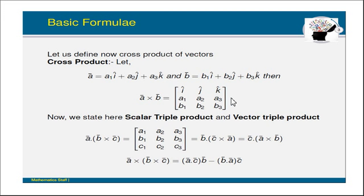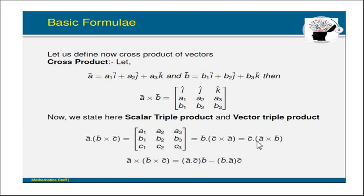Now we state the scalar triple product. a-bar dot (b-bar cross c-bar) can be defined as the determinant with first row a1, a2, a3; second row b1, b2, b3; and third row c1, c2, c3. This equals b-bar dot (c-bar cross a-bar), which also equals c-bar dot (a-bar cross b-bar). Since this determinant contains no i-bar, j-bar, or k-bar, the result is a scalar quantity — that is why it is called the scalar triple product.